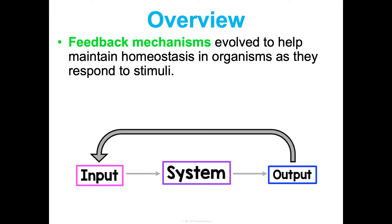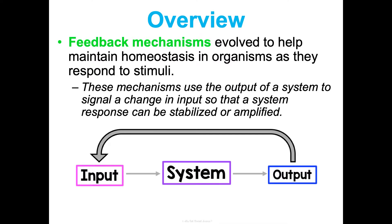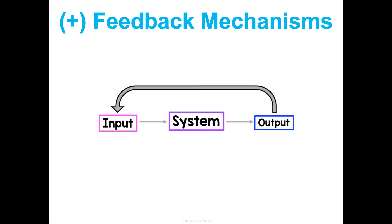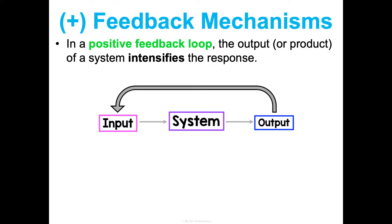How do you maintain homeostasis as an organism? There are things called feedback mechanisms that have evolved to help us maintain homeostasis as we take in stimuli and respond to them. Essentially, the output of our system is going to signal some sort of change in the input — either we're going to stabilize or we're going to amplify a response. These can be done positively or negatively. A positive feedback mechanism is also referred to as a positive feedback loop.